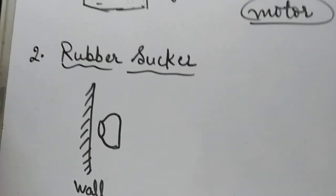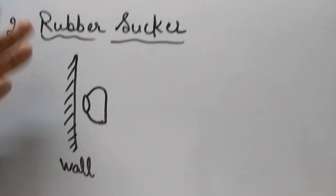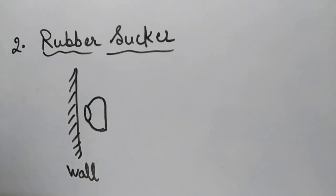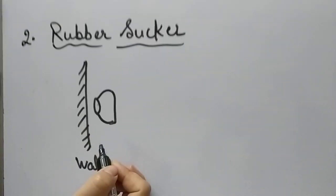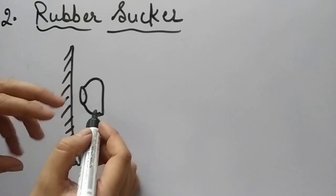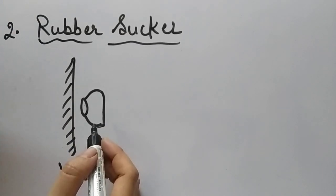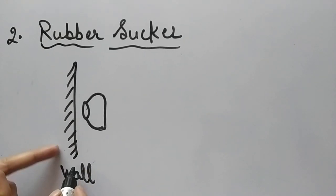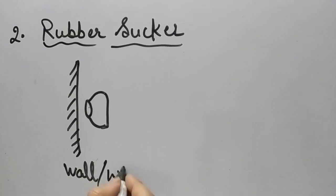These are basically there in the windshields. The windshields in your cars have this kind of rubber sucker. It is a small rubber body which is placed in between the windshield, the center of the windshield of your cars. Suppose we are having a wall or you can say the window of a car.